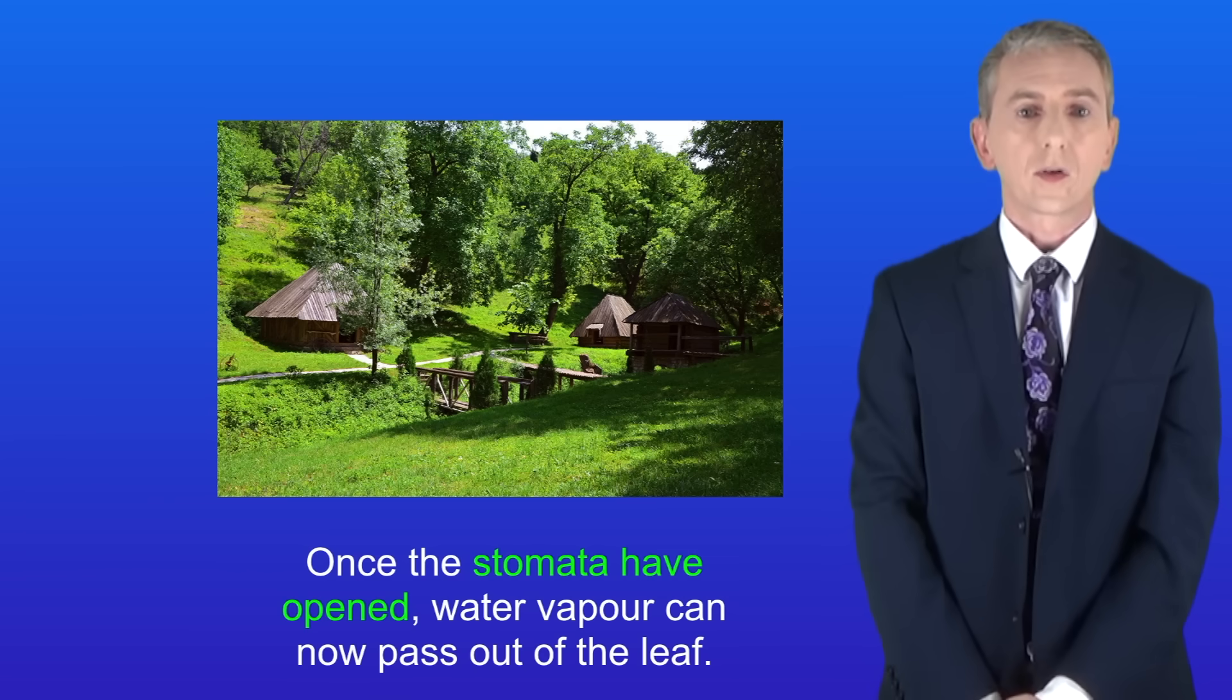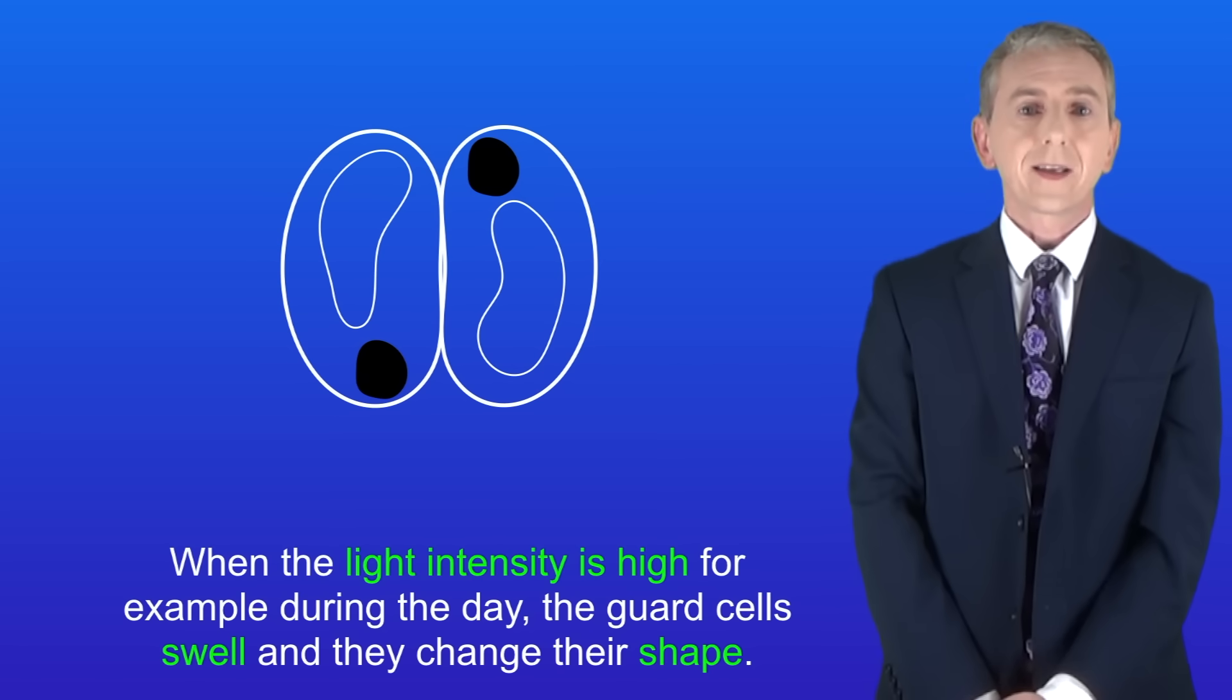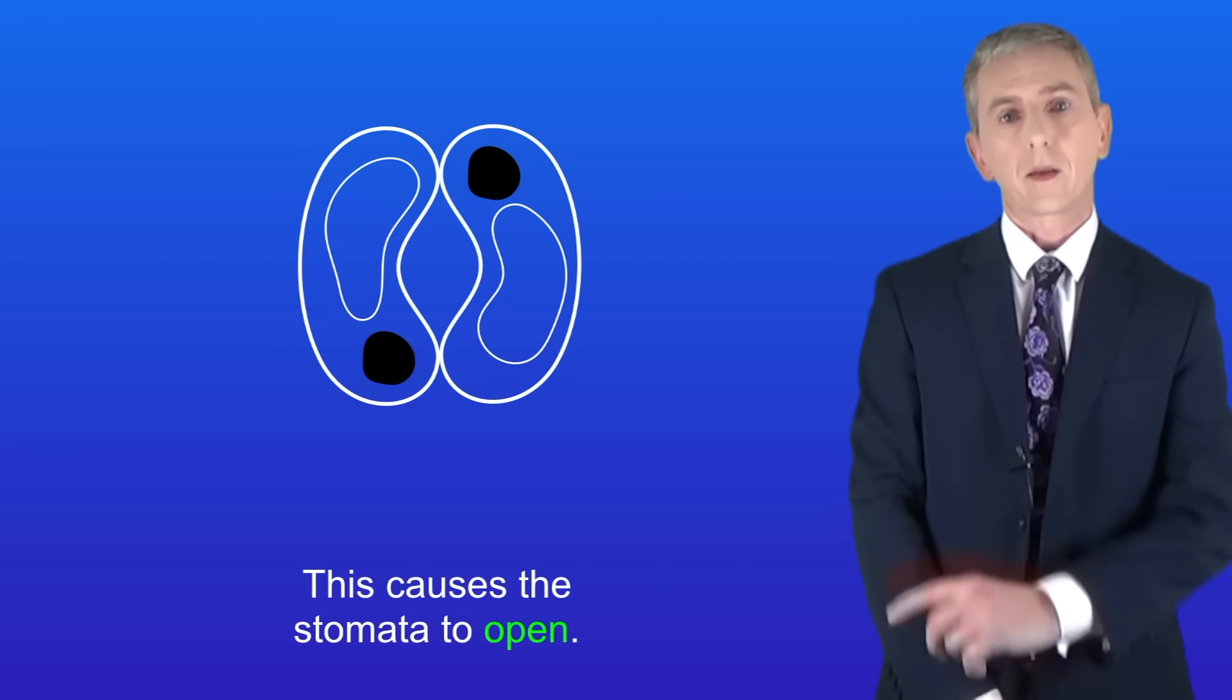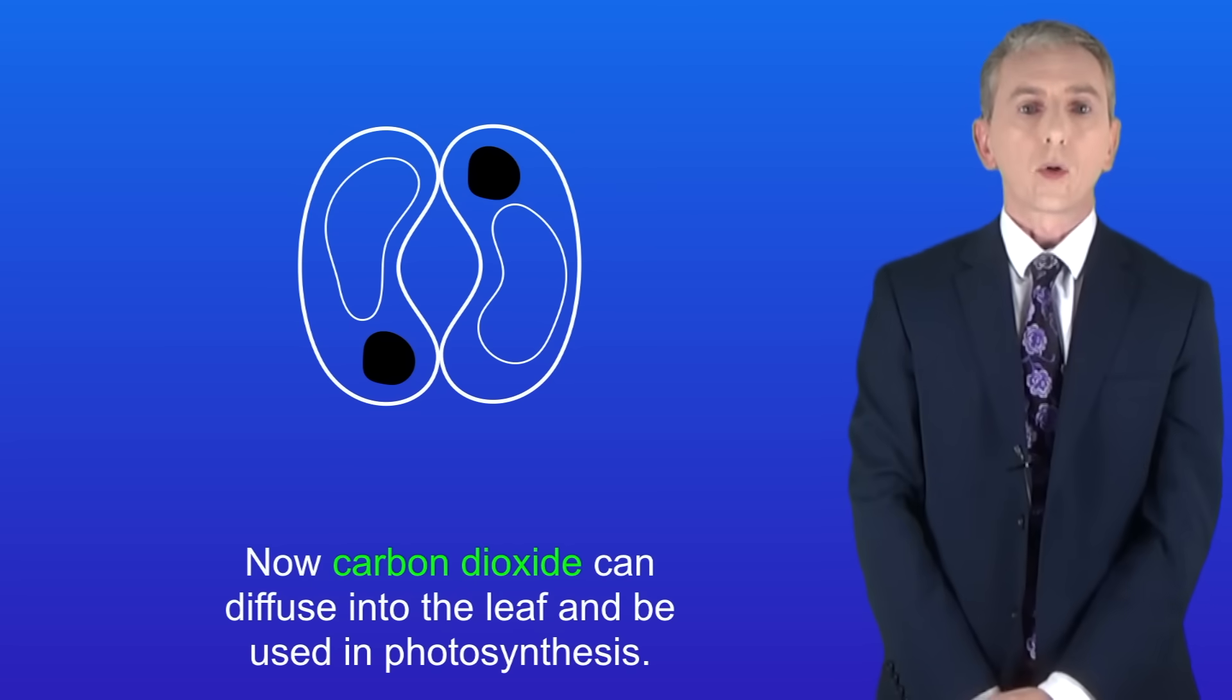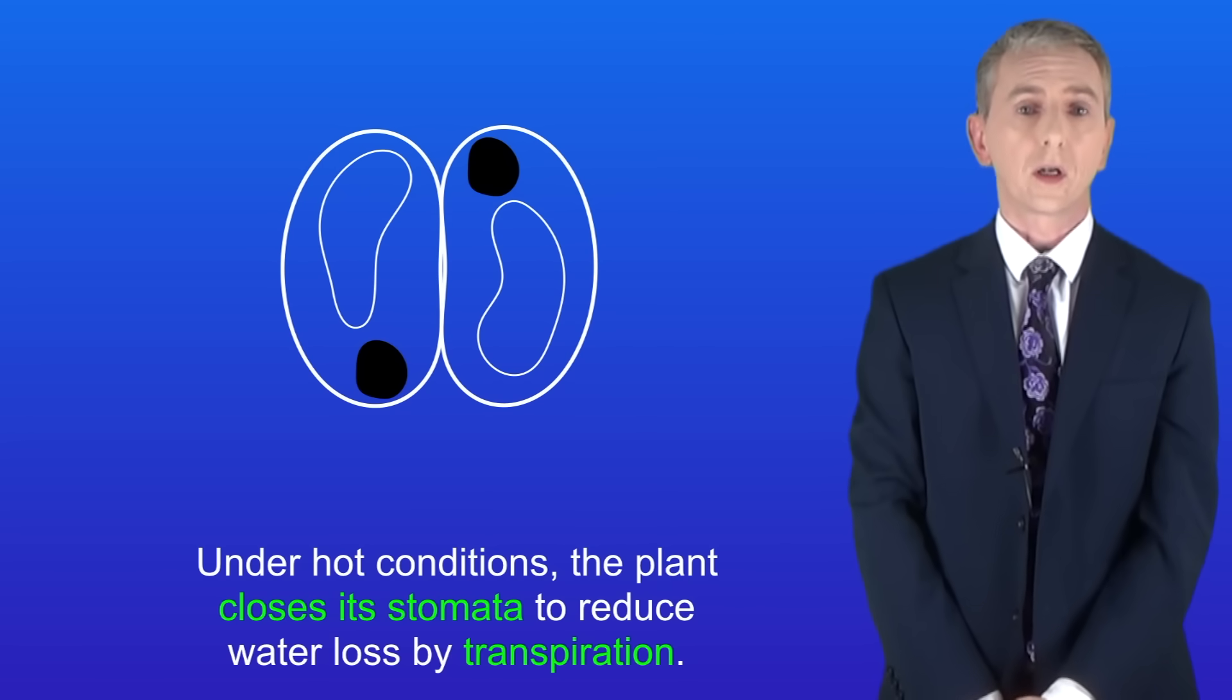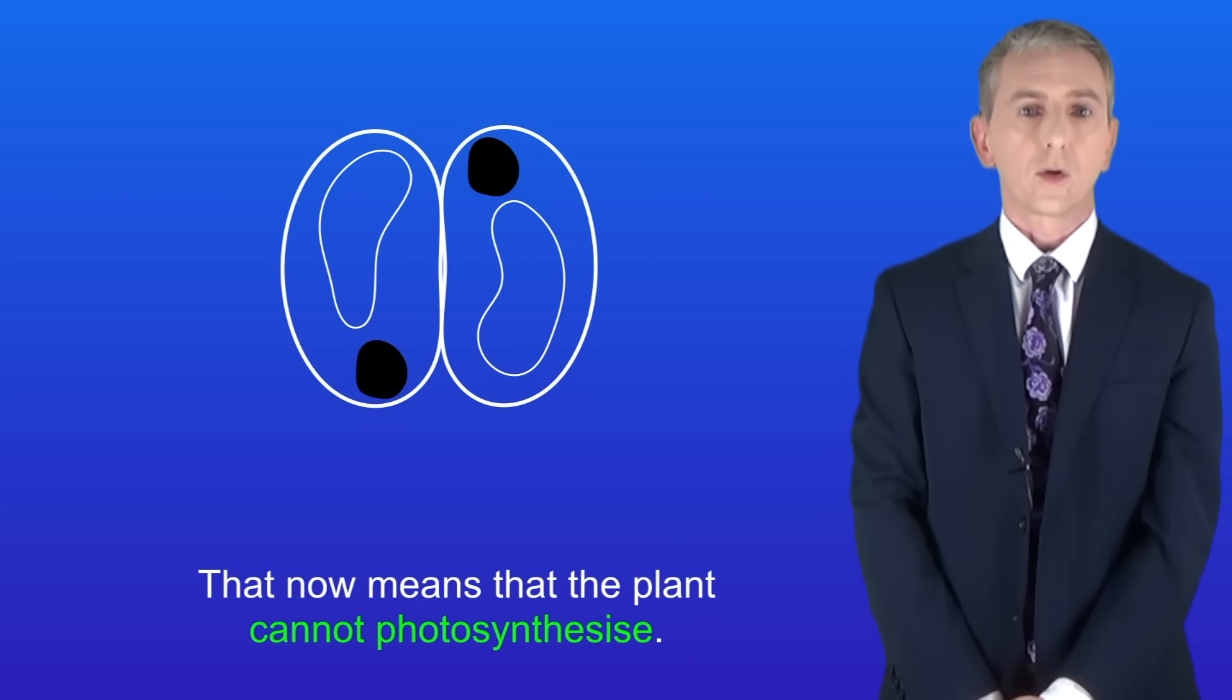We're going to finish now by looking at how stomata work. Stomata are surrounded by two guard cells. When the light intensity is high, for example during the day, the guard cells swell and they change their shape. This causes the stomata to open. Now carbon dioxide can diffuse into the leaf and be used in photosynthesis. Under hot conditions the plant closes its stomata to reduce water loss by transpiration, but that means the plant cannot photosynthesize.